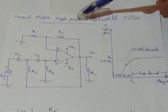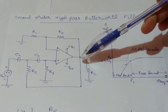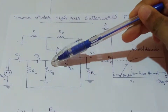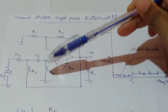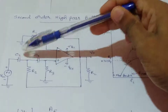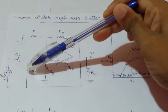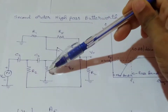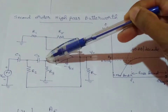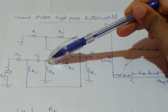Today we are going to study the second-order high-pass Butterworth filter. This is the circuit diagram for it. This filter can be formed from a second-order low-pass Butterworth filter simply by interchanging the frequency-determining resistors and capacitors. The resistors used in the low-pass filter are replaced by capacitors, and the capacitors are replaced by resistors, to obtain this second-order high-pass Butterworth filter.